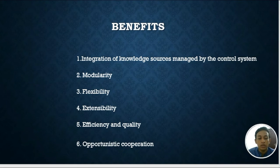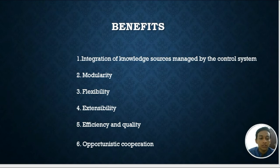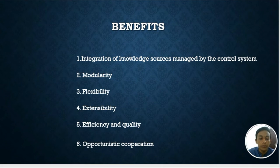Fifth, efficiency and quality — more than one knowledge source can perform the same function, so the control component can select the one that will provide the most benefit to the emerging solution, improving both problem-solving efficiency and the quality of the eventual solution. Sixth, cooperation — cooperation in a blackboard system is explicitly opportunistic. Knowledge sources can post partial solutions to the blackboard in the hope that other knowledge sources will be able to use them to find the final solution.